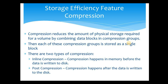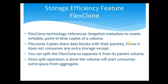There are two types of compression available: inline compression and post-process compression. In inline compression, compression happens in memory before the data is written to disk — this uses write performance, so you should avoid inline compression where write performance is critical. In post-process compression, the compression happens after the data is written to disk.